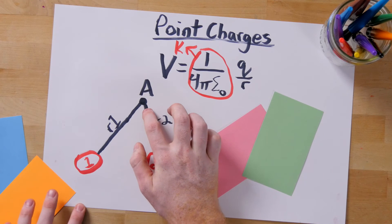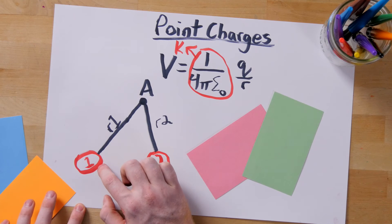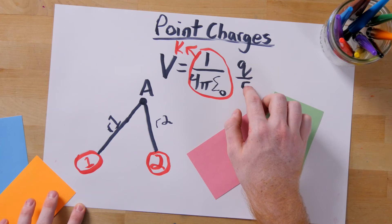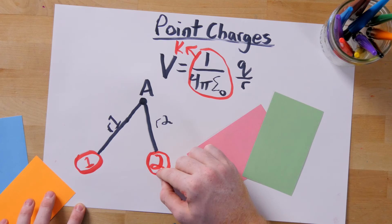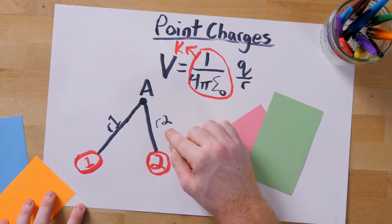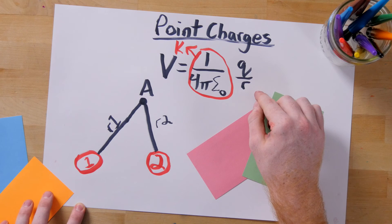At point A, I am distance r1 from charge 1. So I can plug that in to get the potential made by charge 1. But I am also near charge 2. So I plug in q2 and the distance from point A to charge 2, which I have labeled as r2, into the equation.